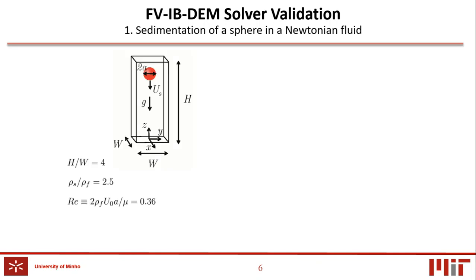The finite volume immersed boundary discrete element method solver validation was firstly done with the sedimentation of a sphere in a Newtonian fluid. The box aspect ratio is fixed at H over W equals to 4, and the density contrast equals to 2.5. And finally, the dimensionless Reynolds number computed using the unbounded sphere terminal velocity U0 was fixed equals to 0.36.